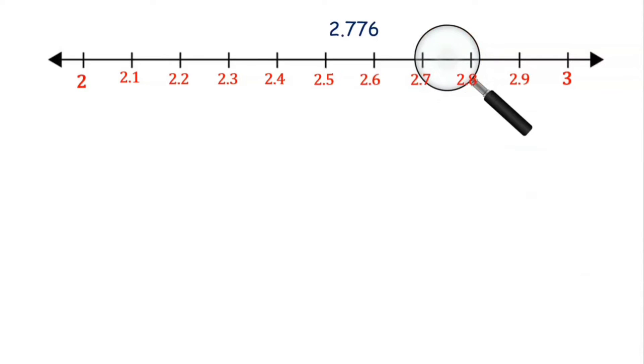Assuming that this portion is magnified again using a magnifying glass, we imagine that this portion has been divided into 10 equal parts. Between 2.7 and 2.8 we are dividing this into 10 equal parts. This marking will represent like 2.71, 2.72, 2.73, and so on up to 2.8.